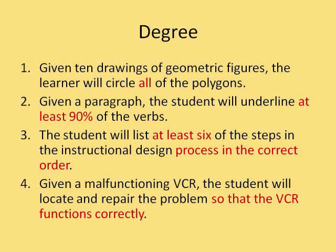In our four examples of objectives, the degrees are stated differently. In the first example, the degree is stated by number of correct responses: all. In the second example, the degree is stated as the percentage correct: at least 90%. In the third example, the degree is stated as the minimum of correct responses: at least six in the correct order. In the last example, the degree is stated as a consequence: so that the VCR functions correctly.